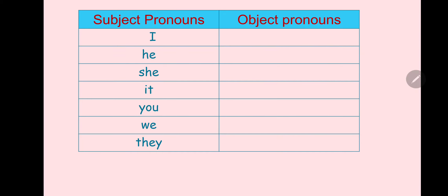Page 45 — subject pronouns. These come at the beginning of the sentence before the verb: I, he, she, it (for animals and plants), you (singular and plural), we, they. Examples: I am a student. He is a teacher. She is a doctor. It is a cat. You are a technician. We are students. They are students.